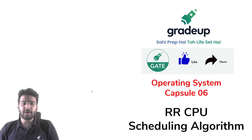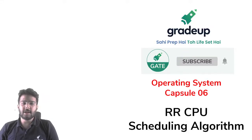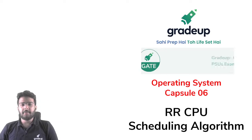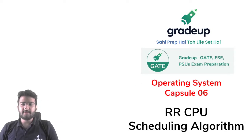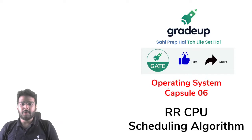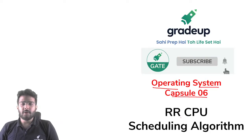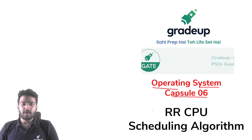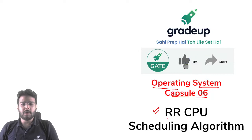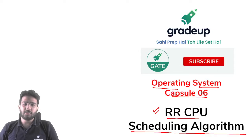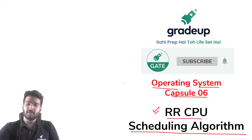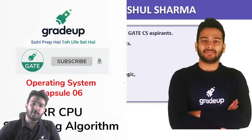Hello students, welcome to Grade Up, India's largest live learning platform. In this Operating System Capsule 6, we are going to talk about the RR CPU scheduling algorithm, that is the Round-Robin CPU scheduling algorithm. So let's start.